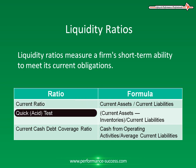The quick test or acid test is current assets minus inventories divided by current liabilities. The quick test is similar to the current ratio, with the only exception of netting out inventories from current assets. Inventories are excluded as they can sometimes be illiquid — that is, hard to convert into cash.